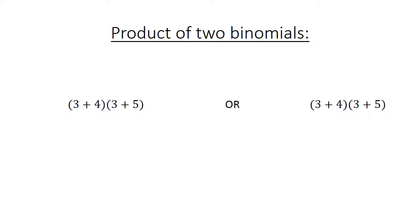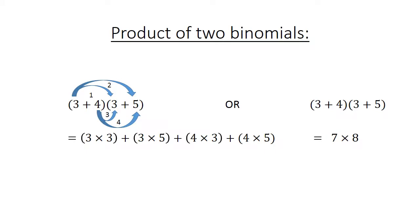Product of 2 binomials. We have in brackets (3 plus 4) times (3 plus 5). We multiply the first term in the first bracket by the first term in the second bracket, then the first with the last, then the last with the first, and the last with the last. This gives: 3 times 3, plus 3 times 5, plus 4 times 3, plus 4 times 5.